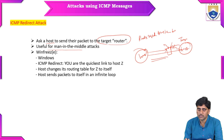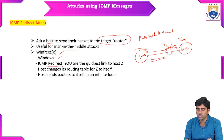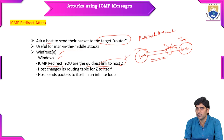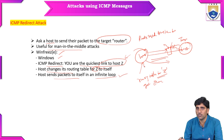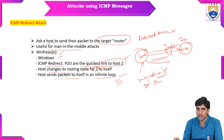ICMP redirect provides quickest links to host-Z, giving attackers an immediate attack path. If any host or route changes, the routing table for host-Z is also changed automatically. A host can be made to send packets to itself in an infinite loop, and sending more packets continuously to the target system is the process of redirect attacks.